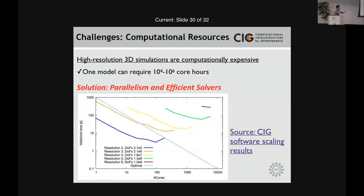The last point I wanted to address is the issue of computational resources. A 3D model can be quite expensive — particularly if you have strong variations in viscosity, which is normal for nonlinear models. The answer is parallelism and efficient solvers. I'm showing here an example of a weak scaling result for the code ASPECT on Stampede2, plotting wall clock time for two solves as a function of the number of cores. The ideal case is an optimal scaling line.